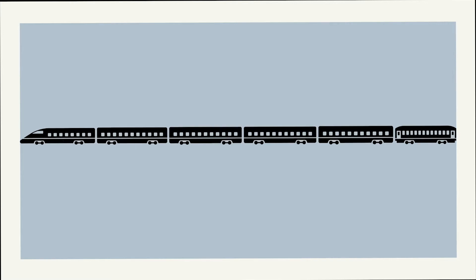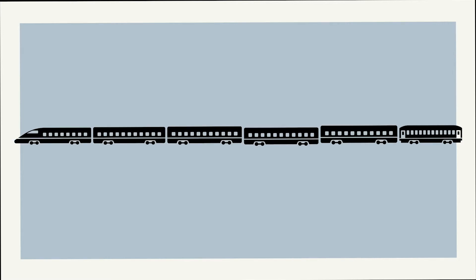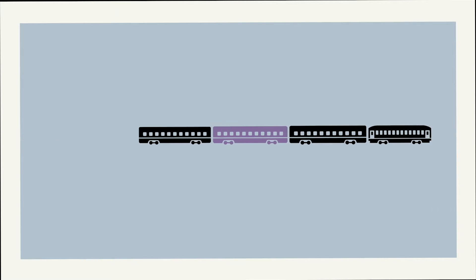The best way to understand it is to picture a train. The train has the head and the wagons and they are linked. I can remove, replace and add new wagons, but I must always have the head. The head is where everything starts from, and each item in a sequence is called a node.